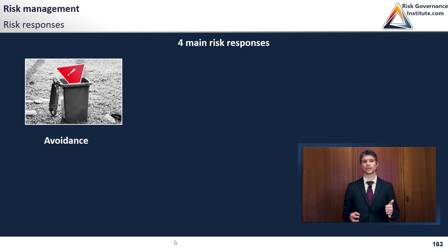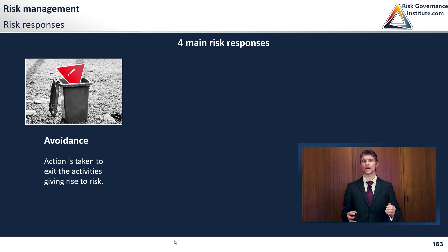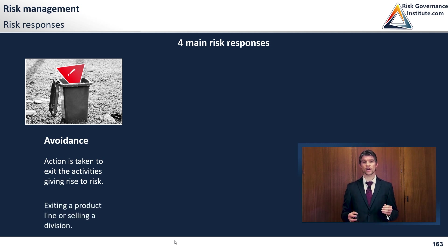We have avoidance. Think again — what does avoiding a risk mean? Action is taken to exit the activity giving rise to the risk. So avoidance means you're completely avoiding the activities, completely eliminating your risk by not doing them. For example, you're a large luxury brand and you decide to exit the China market — that would be avoiding all the risks from that market. Exiting a product line, selling a division, or exiting a market would all be examples of completely avoiding a risk.